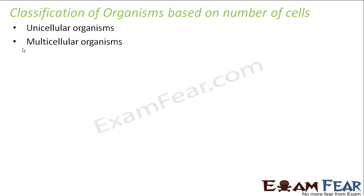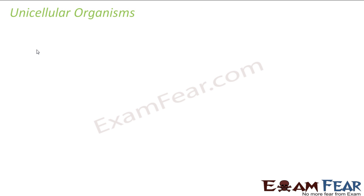When we say unicellular, from the name itself you can guess what it means — uni plus cellular. Uni means one, cellular means cells, so unicellular organisms are those with one cell. Similarly, multi means many, so organisms with many cells are multicellular organisms.